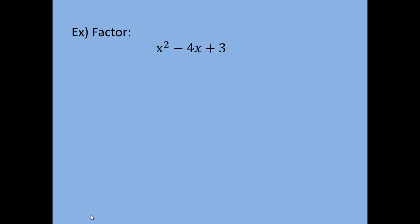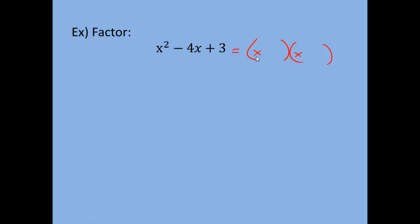Let's factor x squared minus 4x plus 3. First, there is no GCF for the whole thing — no factor can be taken out of all three terms except one. We have three terms and the coefficient in front of x squared is one, so we right away make two sets of parentheses. We need x and x here because the first step of FOILing gives x times x equals x squared. If it said y squared, you'd have y times y, so since this is x squared, you need x times x.